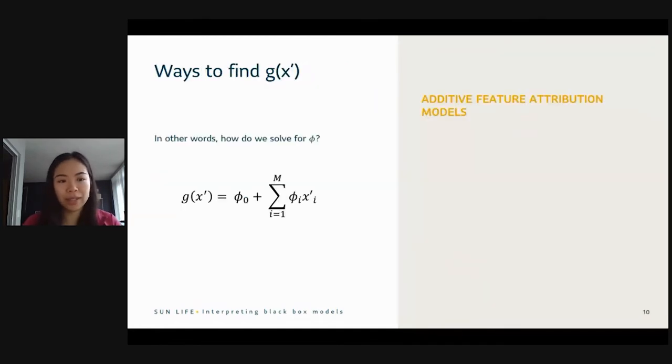Okay, so those are the three properties we're looking for for g of x. Now, how do we find g of x? So in other words, how do we calculate these phi values? Because that's essentially what we're looking for, to measure the importance of each feature. Now, there are a family of models of g of x to help with that. They're all additive, in that they're linear. The first one is LIME. You may have heard of that. DeepLift. And Shapley Additive Explanations, or SHAP for short. And this is the one that we'll be talking about today. The pro about SHAP is that it's the only one to meet all three properties that we mentioned, or I mentioned earlier.